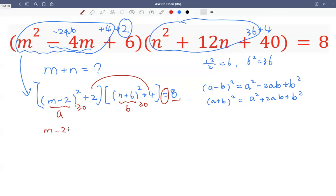So m minus 2 squared also has to be 0, and n plus 6 squared has to be 0. That means m minus 2 is 0 and n plus 6 is 0. That forces m to be 2 and n to be negative 6.